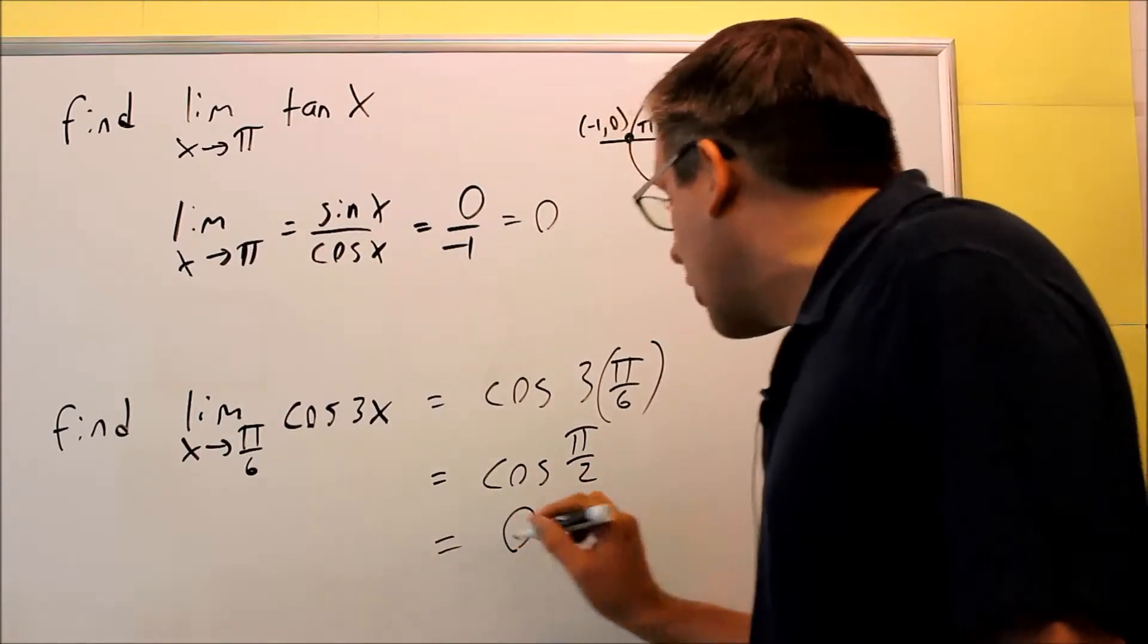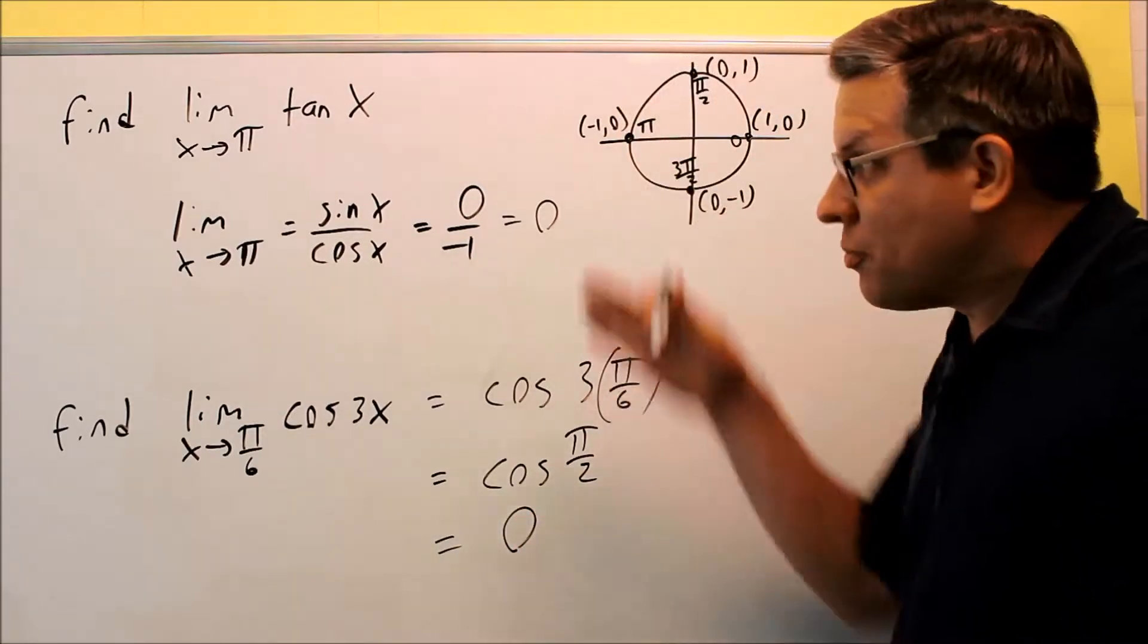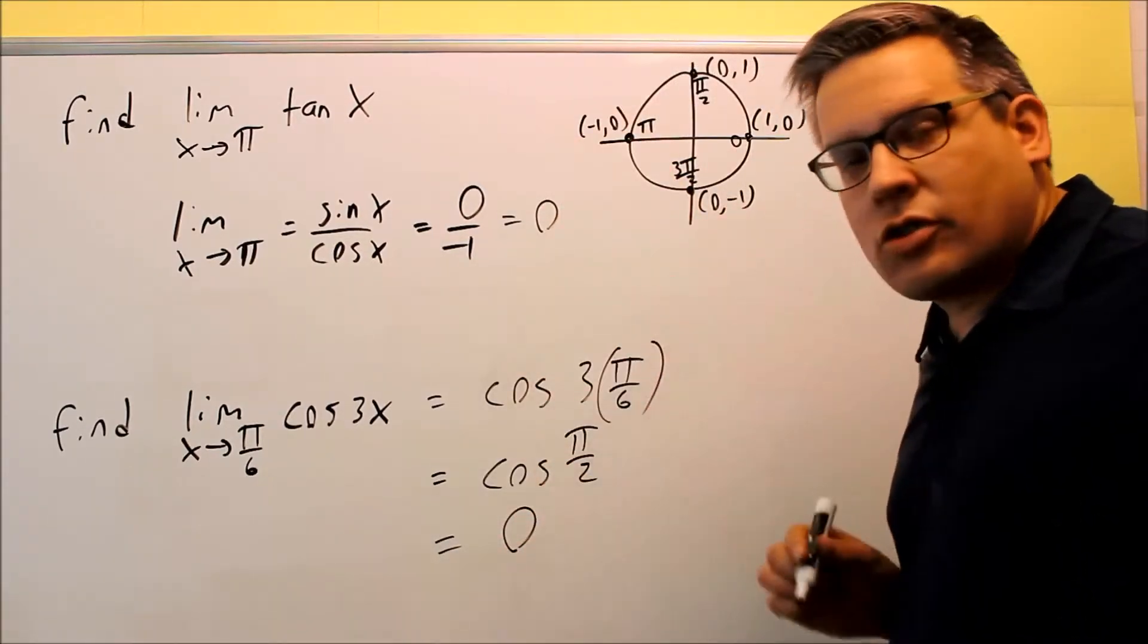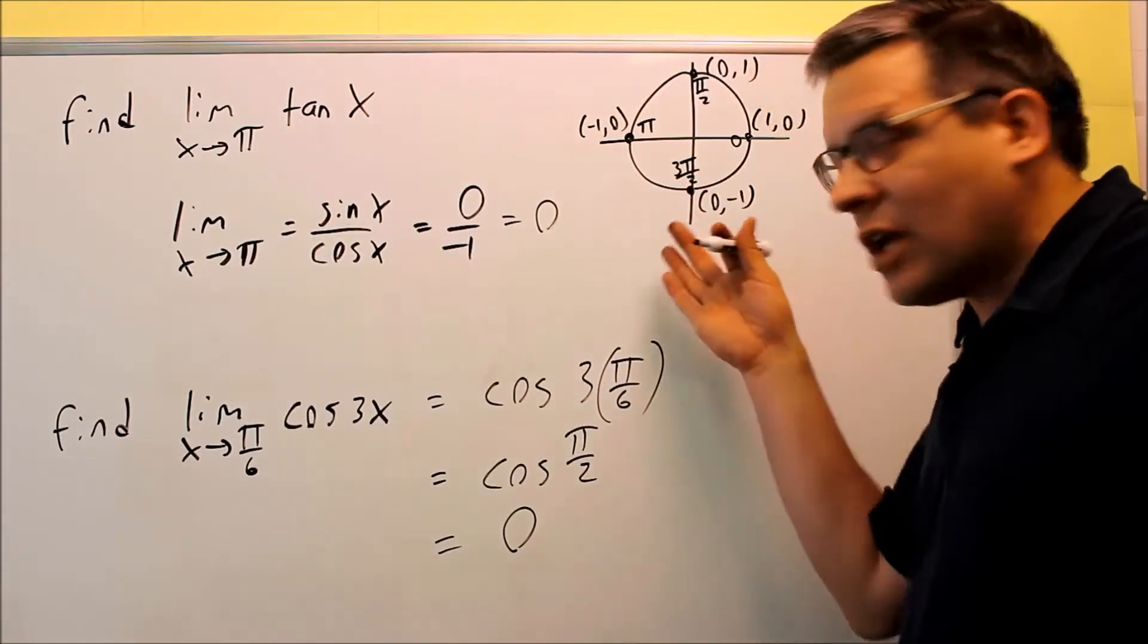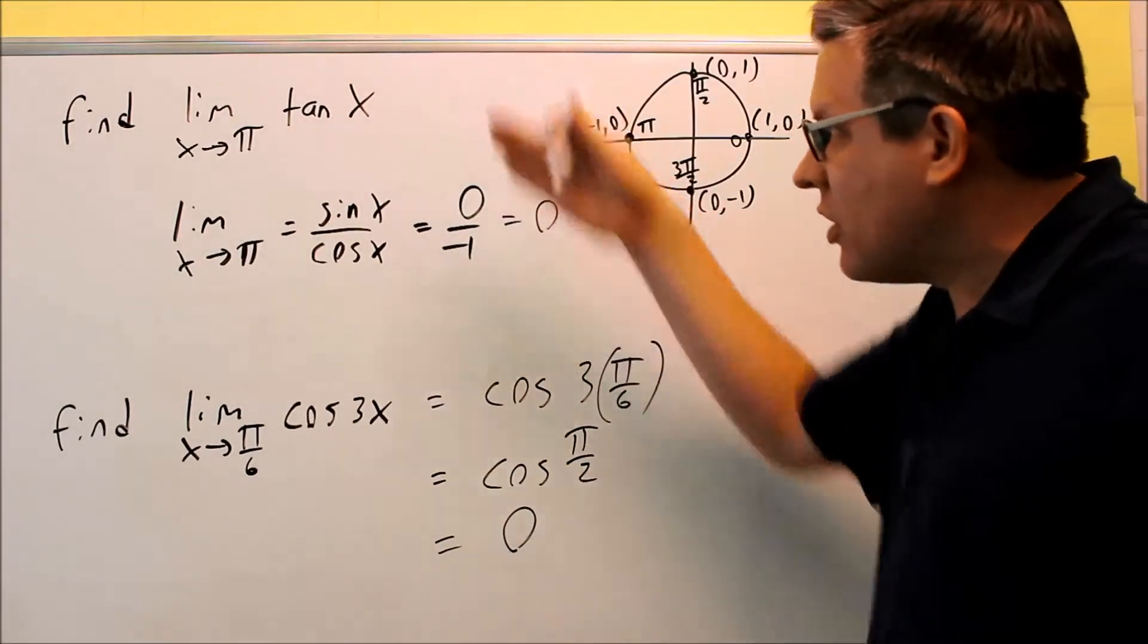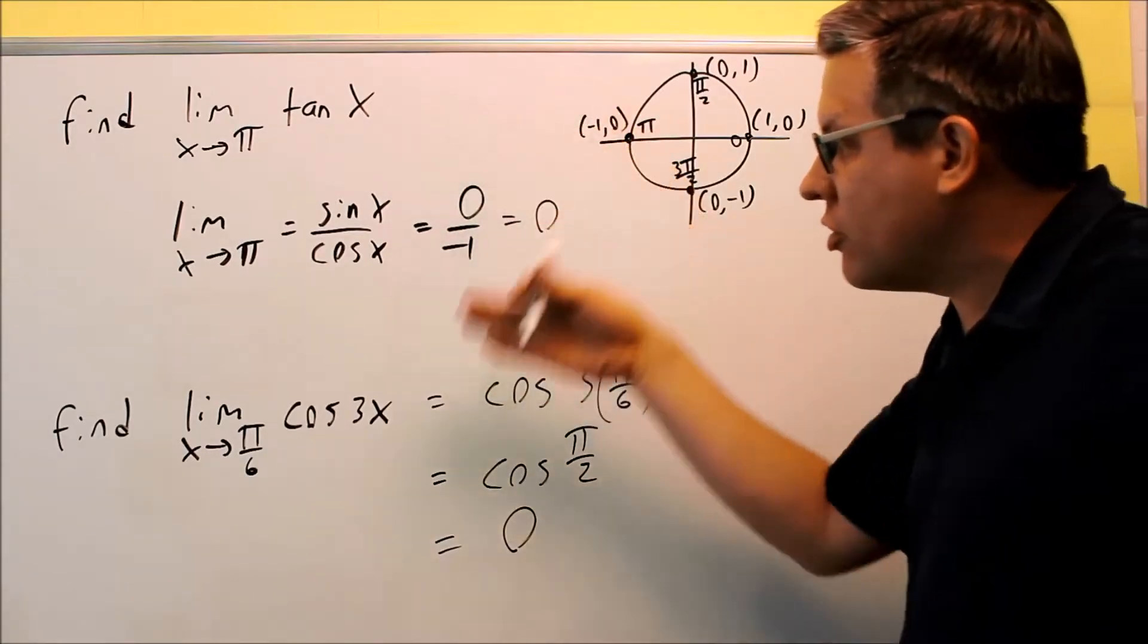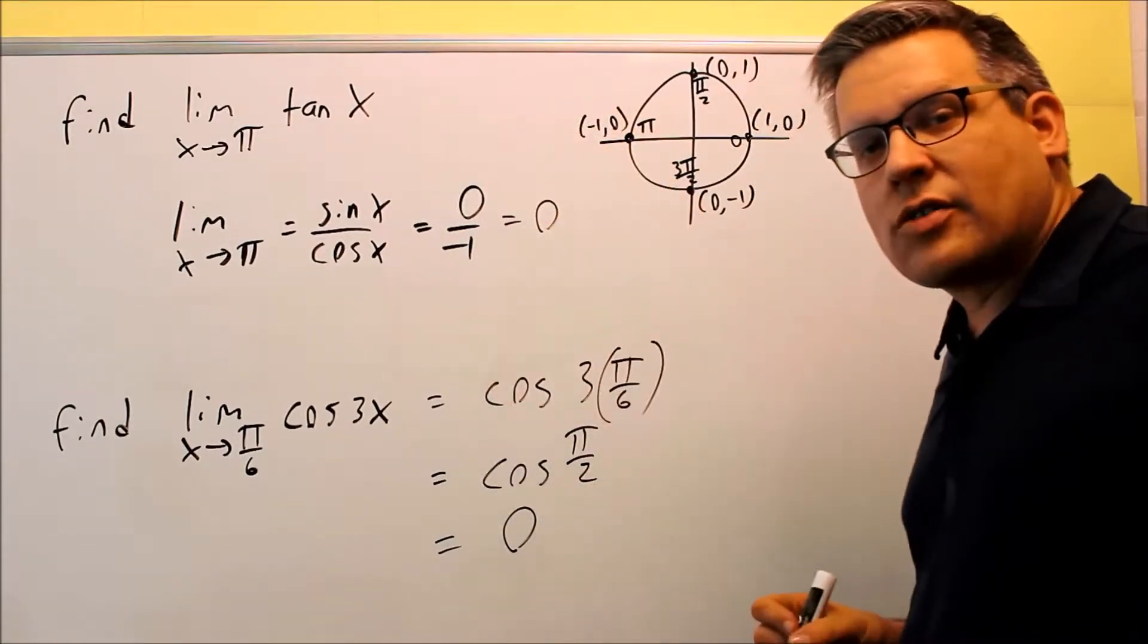Okay, so the answer for the whole problem there, this is also 0. So both of these, our answer just so happens to be 0. Is that always going to happen? No, just coincidence that these two particular examples, we got 0. Not all trig functions, you'll get a 0 as the answer.